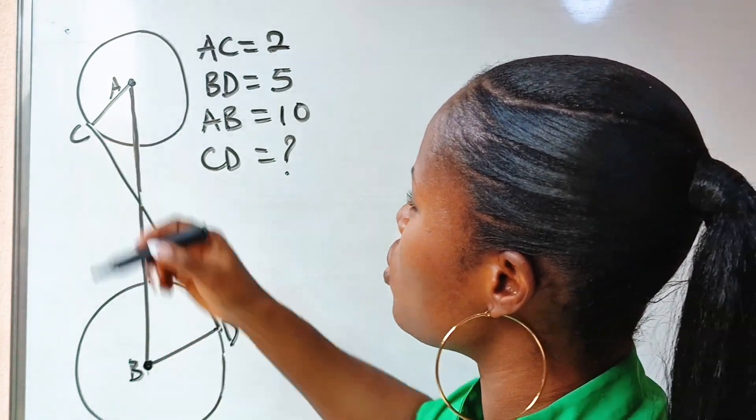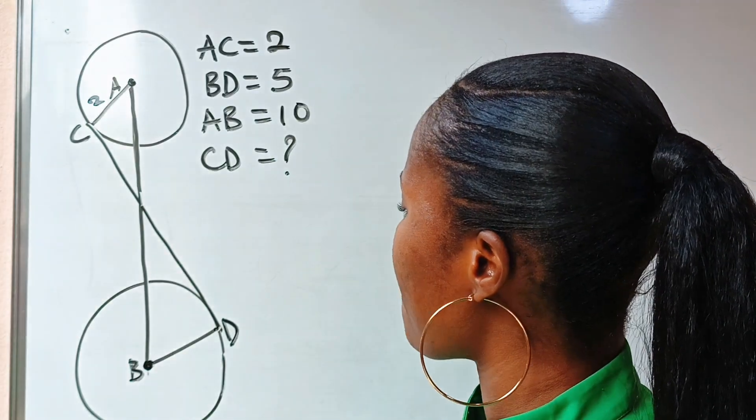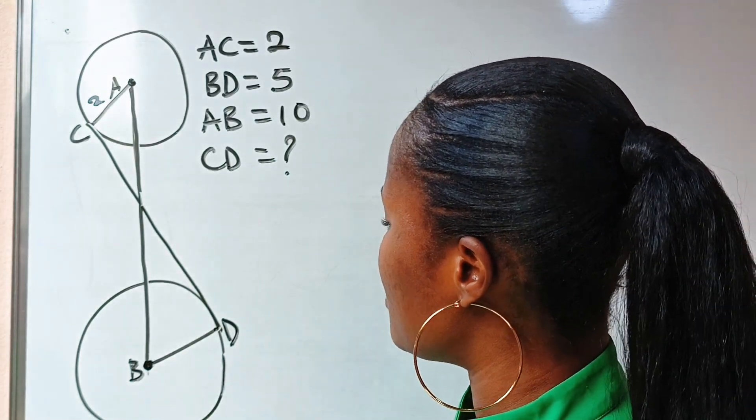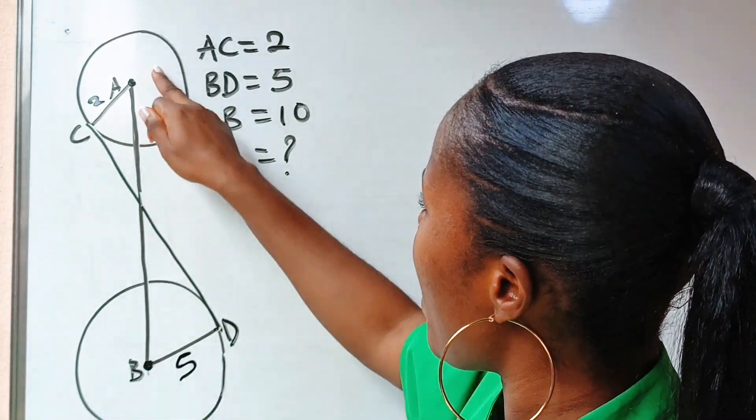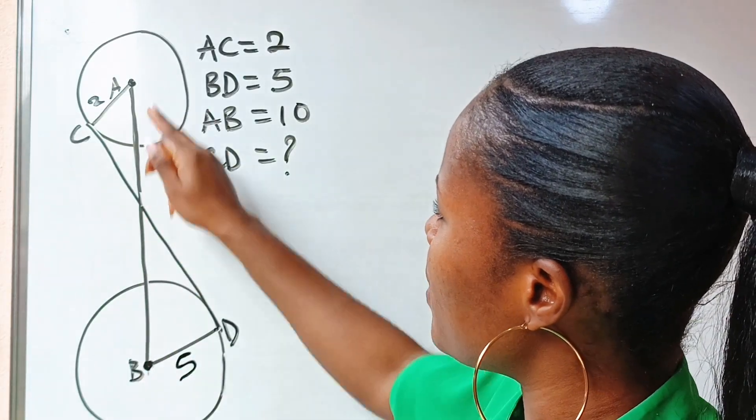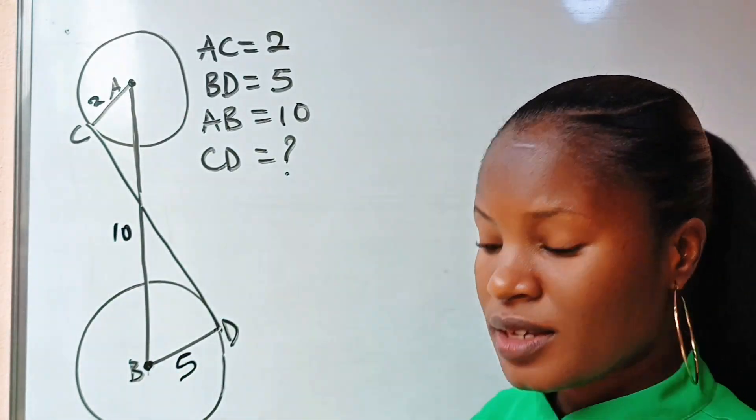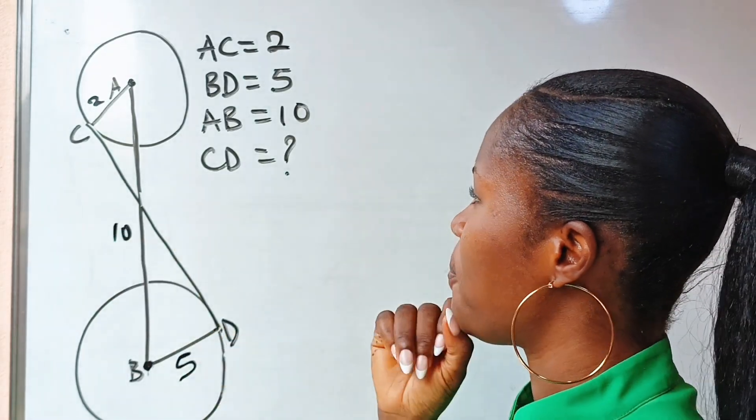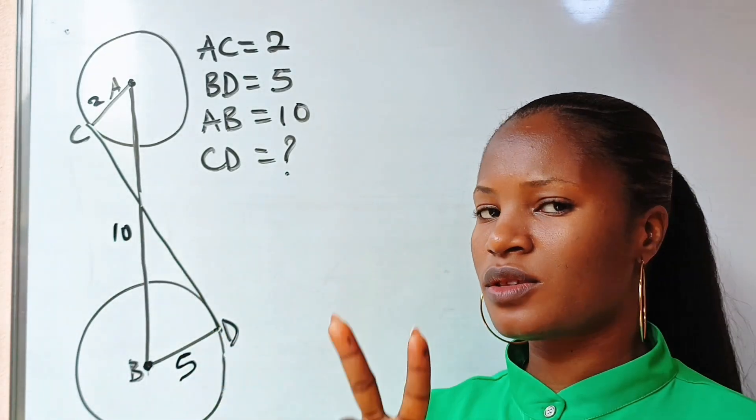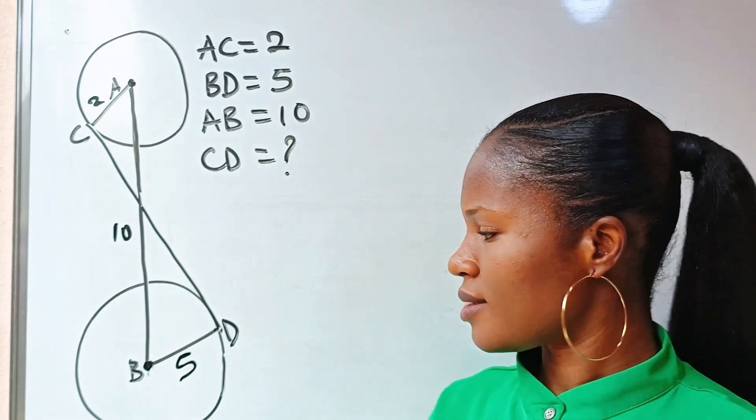So AC is 2, BD is 5. Now AB is 10, the whole of this place is 10. Now we are asked to find CD. We are going to solve this using two methods, okay? So let's start.